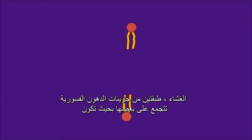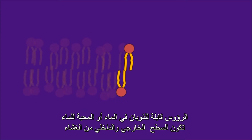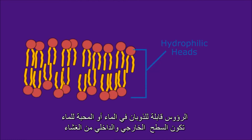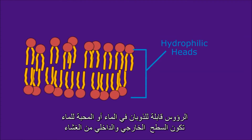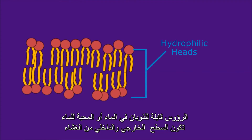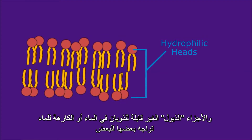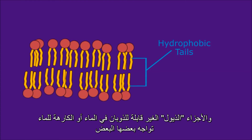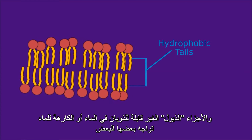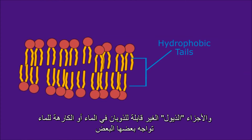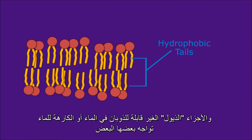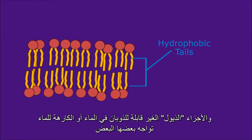Two layers of phospholipid molecules self-assemble so that their water-soluble heads form the surface and interior of the membrane, and the water-insoluble tails face each other.